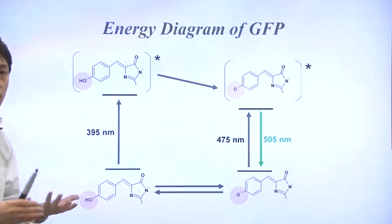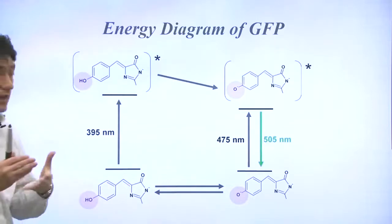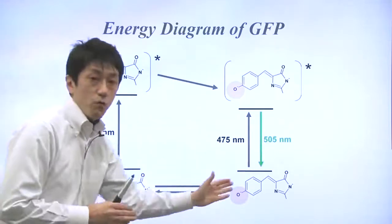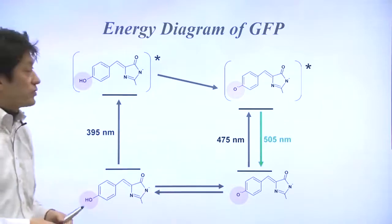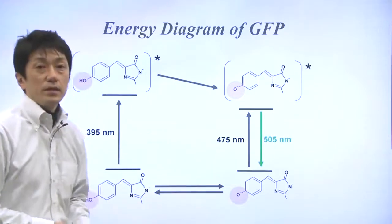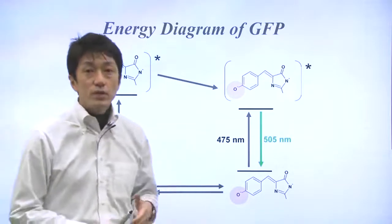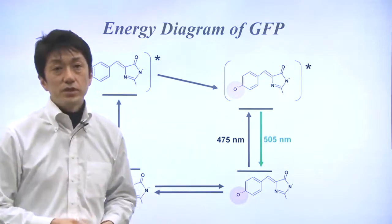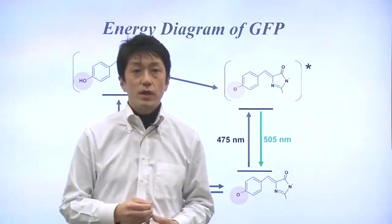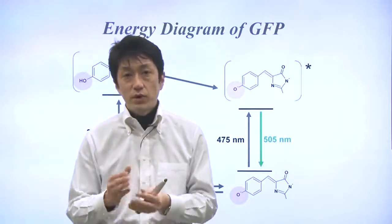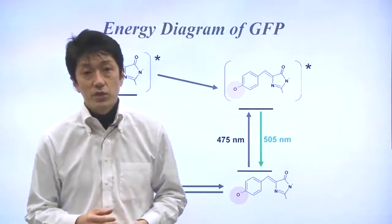The shifting of the equilibrium toward the ionized form should be able to increase the fluorescence of GFP. Such improvement was made by introducing a single-point mutation of serine-65 to threonine, which was reported in 1995 in Nature.